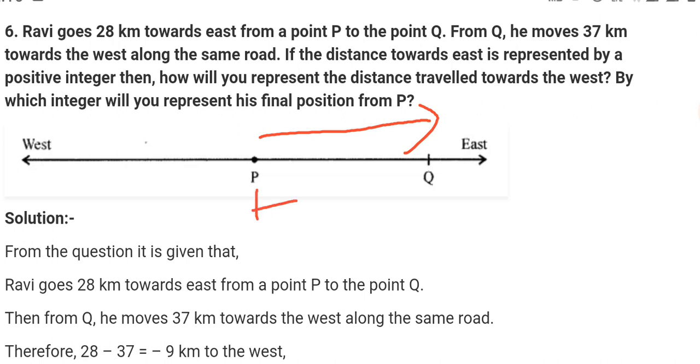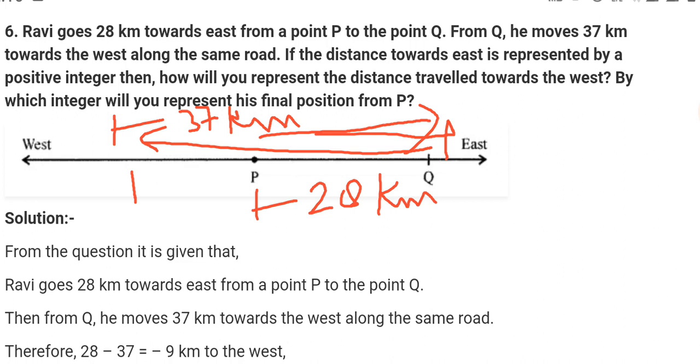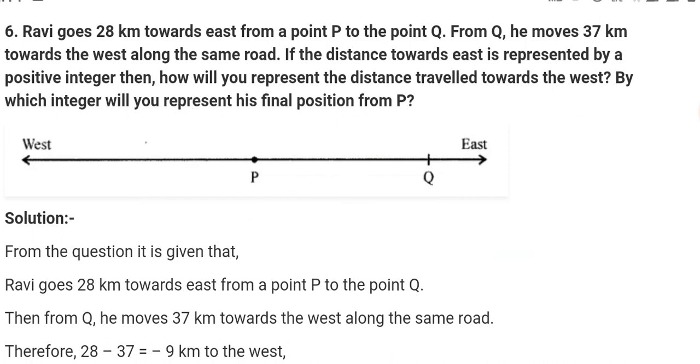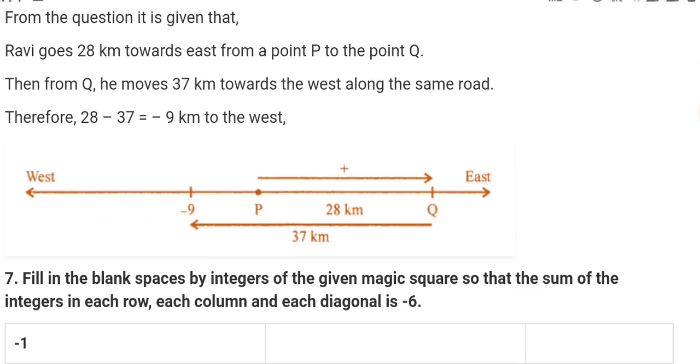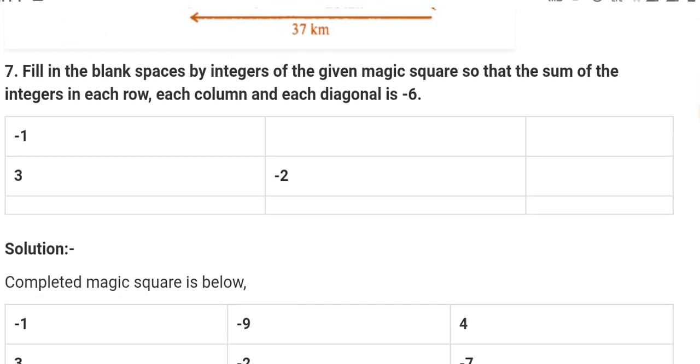So you have to tell the direction and distance from point Q to the west. So 28 minus 37 is minus 9. So negative integer represents minus 9 kilometer to the west. Next, you can see how many of you have told them.